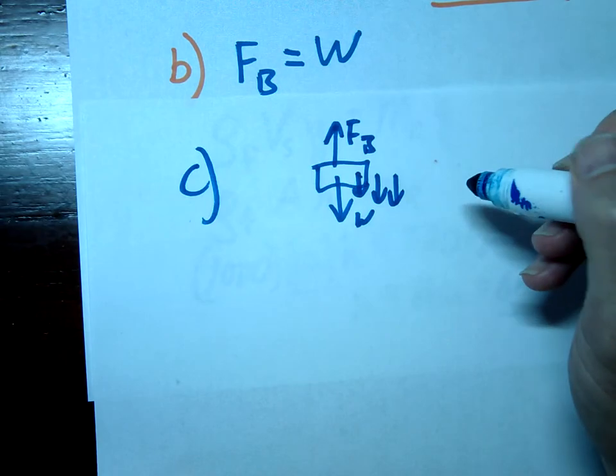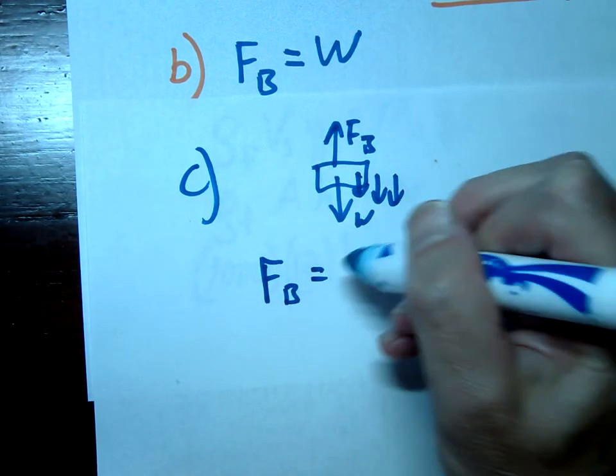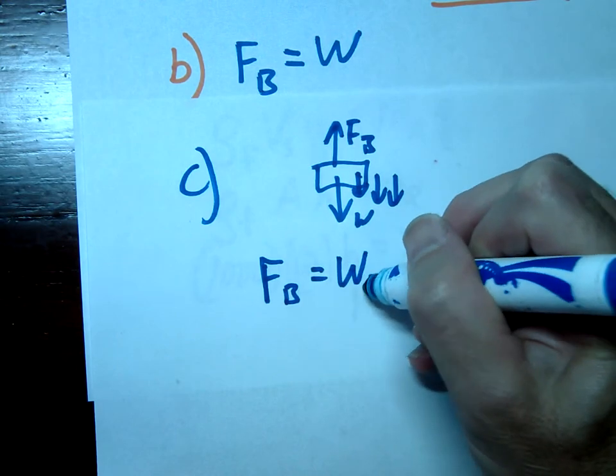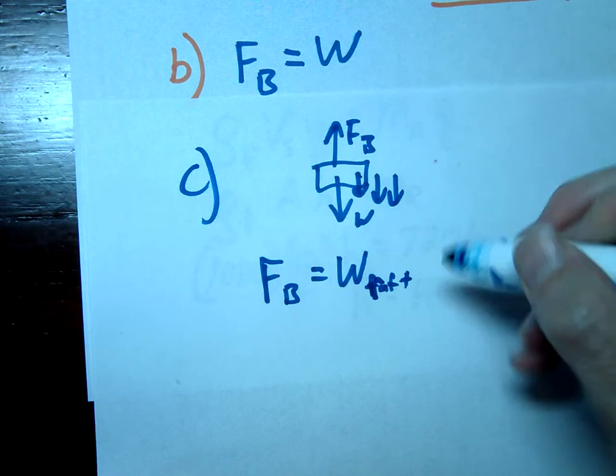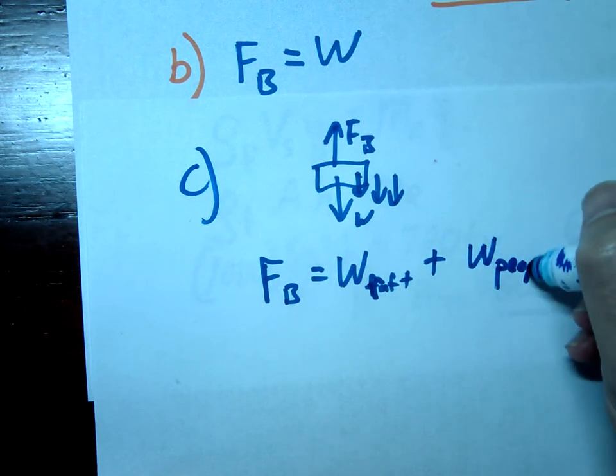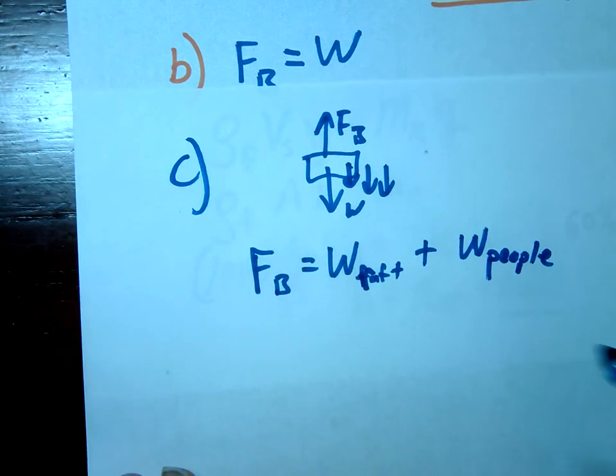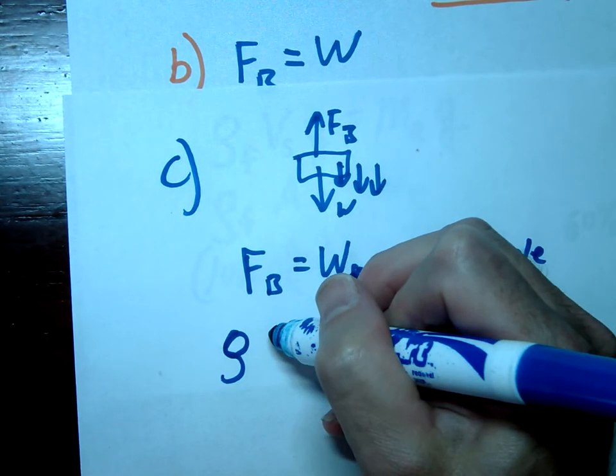So let's just write this as the buoyancy force up has to equal the weight of the raft plus the weight of all the people. So we can write this as again ρgV.